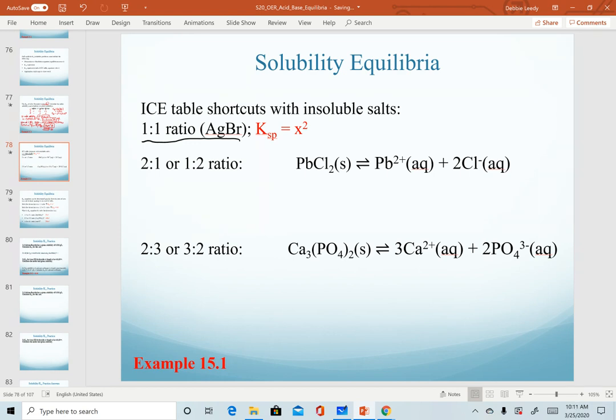If I was working with an example like lead 2 chloride, if I were to set up an ICE table at equilibrium, I wouldn't have any lead 2 chloride. I would just have a value of x for the lead ion and a value of 2x for chloride. Realize that in all of our examples we're going to work, the initials will always be zero, and so at equilibrium we will just have the amount of change.